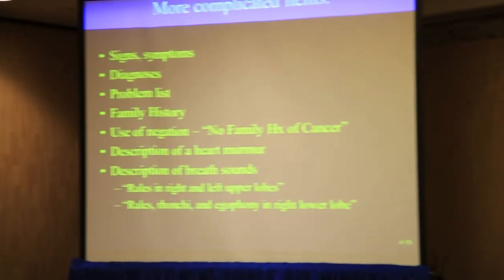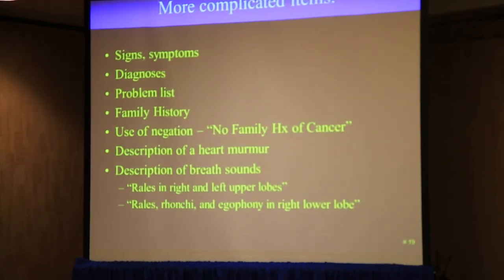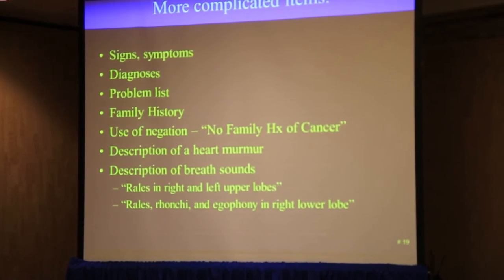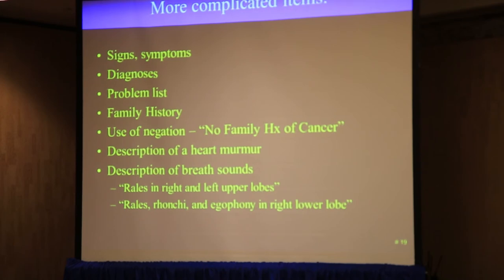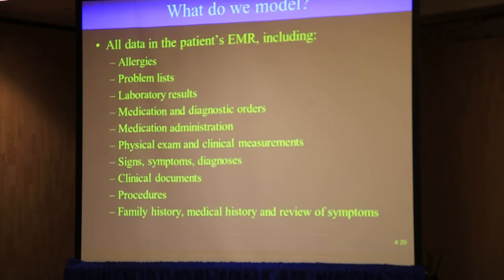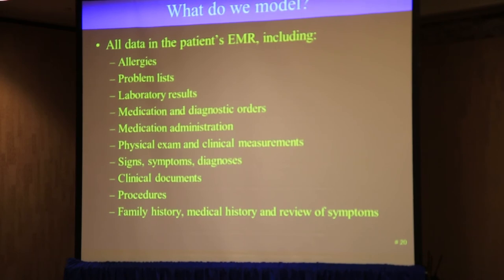I would stress that weights, heights, and blood pressures are the easiest kinds of things to deal with. When you get into other things like signs, symptoms, diagnosis, problem list, and negation, the end-dimensional space you're dealing with becomes huge. You have to have a formal way of representing those ideas. And if you're trying to be comprehensive, you need sets of data elements that span everything from allergies, medications, medication administration, problems, signs and symptoms, et cetera.